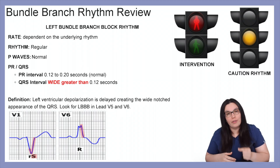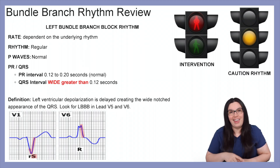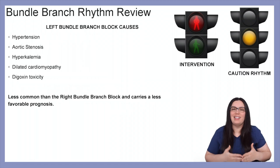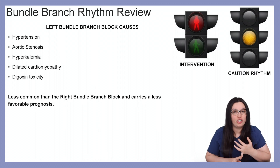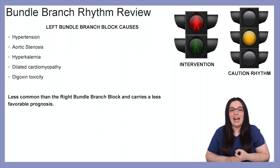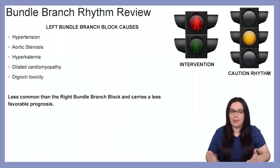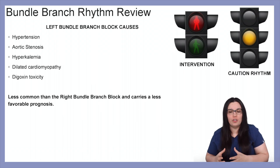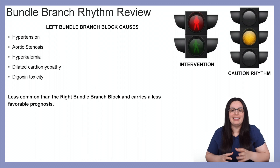You're going to look for a left bundle branch block in leads V5 and V6. Causes for left bundle branch blocks include hypertension, aortic stenosis, hyperkalemia, dilated cardiomyopathy, as well as digoxin toxicity. It's less common than right bundle branch blocks and it also carries a less favorable prognosis.